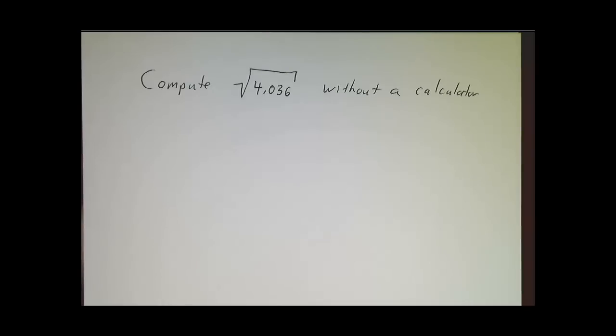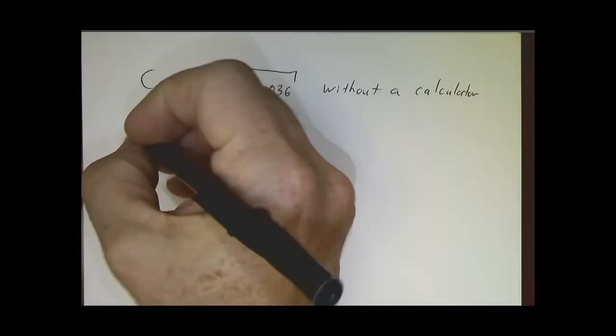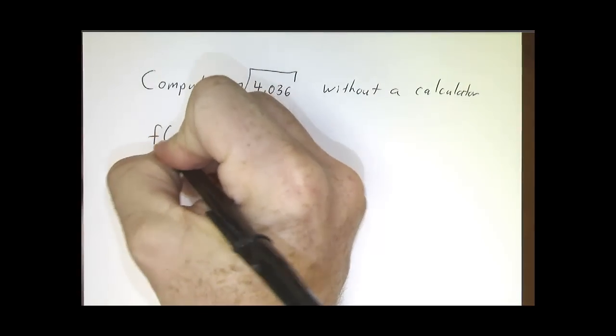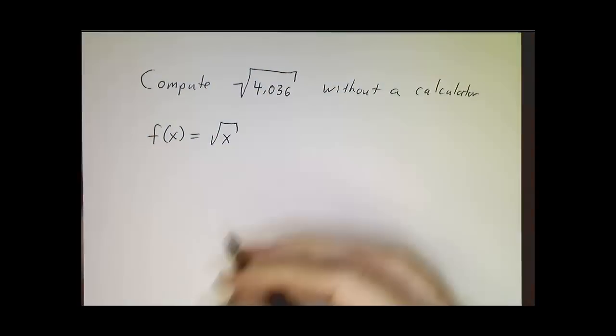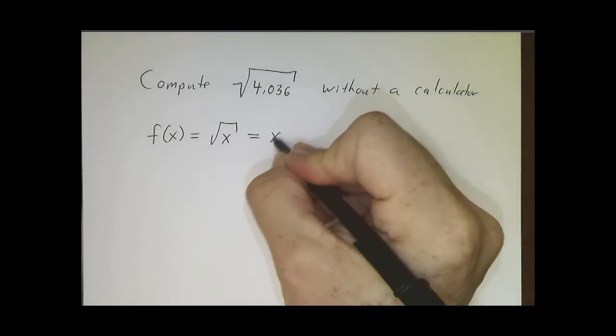So the first one is we're going to try to compute the square root of 4.036 without a calculator. The first thing to identify is what function are we talking about? What we're really talking about is the function f equals the square root of x, in other words, x to the one-half.